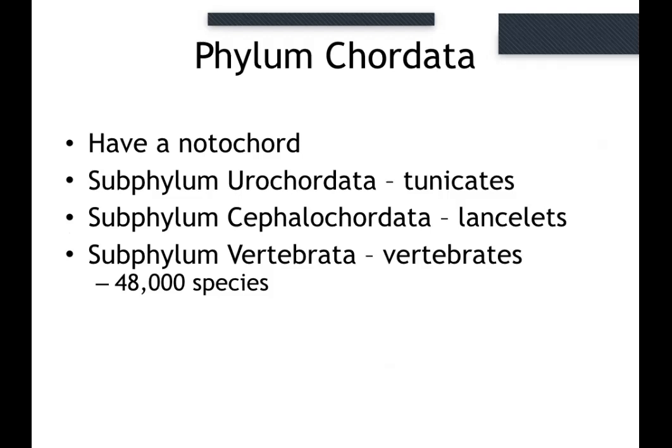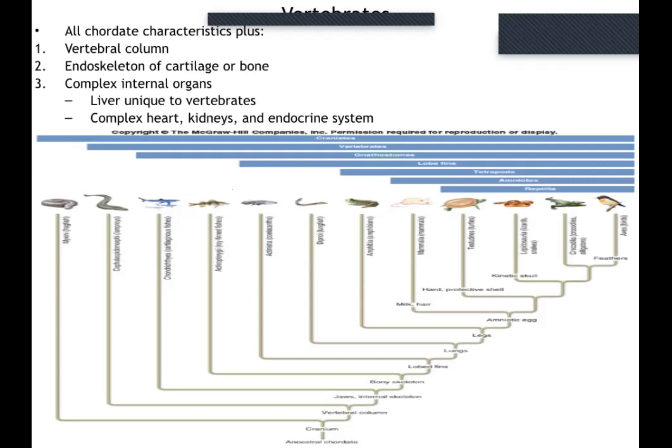If you look at these backbone animals, you'll recognize a lot of them. On the far side we have birds and crocodiles, lizards and snakes, and mammals. On the left side you see different types of fish — from bony fish like what you'd catch at Spring Lake, to cartilaginous fish like sharks, skates, and rays, and then lung fish and all sorts of different kinds of fish. These are representative of backbone vertebrates — that's a subphylum.